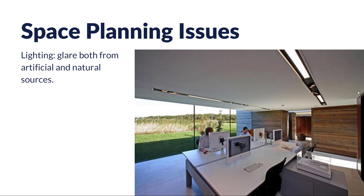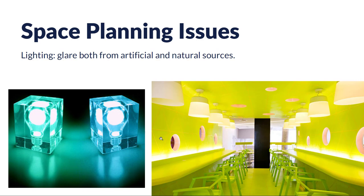With space planning, we also need to be thinking about lighting — both glare and things like that from artificial and natural light sources. In work environments, needing to see a computer screen or TV screen means glare can be a real issue. This particular design has done a fantastic job of having a long overhang over the building so we're not getting glare, but we're still easily getting all that natural light. We also need to think about artificial light sources — a glow from diffused fixtures versus really bright hotspots from exposed bulbs or high wattage. Thinking about that light source and how it's reflecting or absorbing the materials in the space is very important, as well as where the fixtures are located.